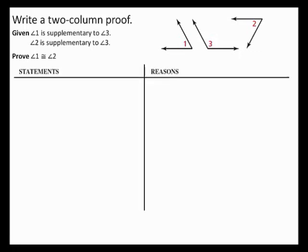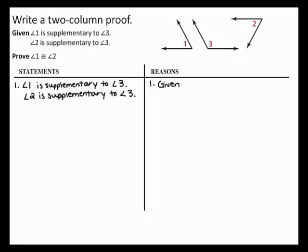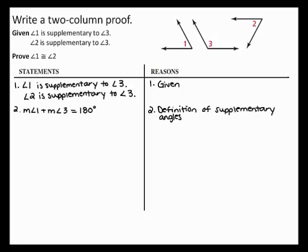To begin this two column proof, first start with the given information. You are given that angle 1 is supplementary to angle 3 and angle 2 is supplementary to angle 3. Next, by the definition of supplementary angles, you can state that the measure of angle 1 plus the measure of angle 3 equals 180 degrees, and the measure of angle 2 plus the measure of angle 3 equals 180 degrees.